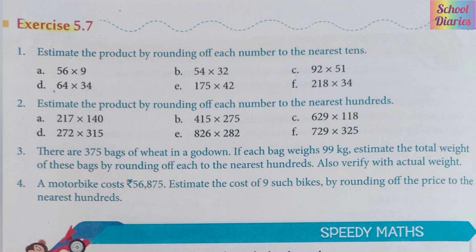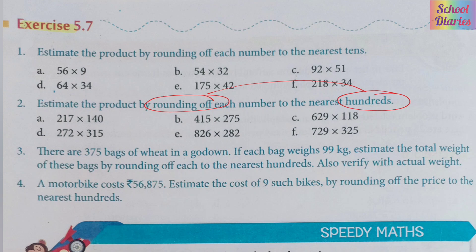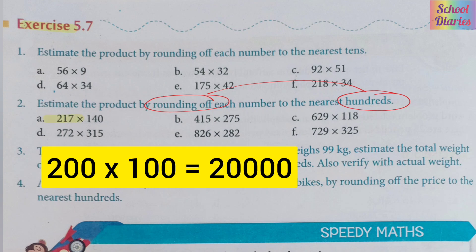In the next question you will find the nearest hundred — round off to the nearest hundred. Here we find the two numbers rounded off to the nearest hundred. For the first question, 217 becomes 200, and 140 becomes 100 — so we then do 200 multiplied by 100. Very simple.